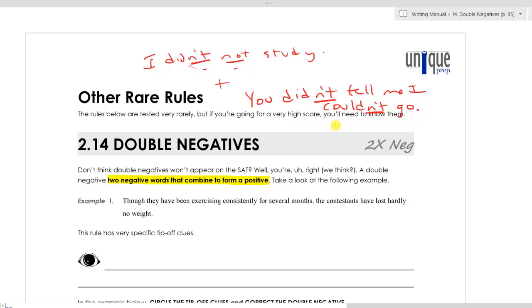But on the SAT, double negatives are always wrong. So if we see two negatives combining to form a positive on the SAT, we need to know that something needs to be corrected.